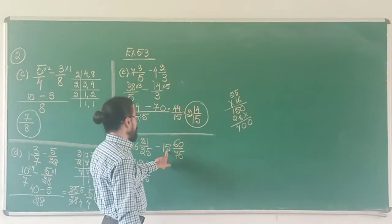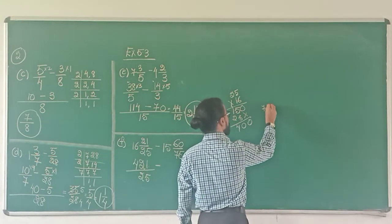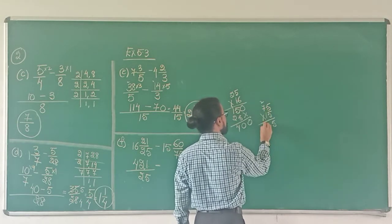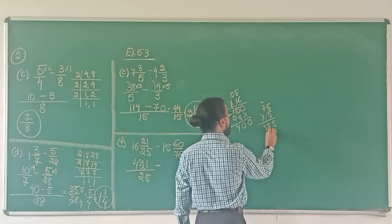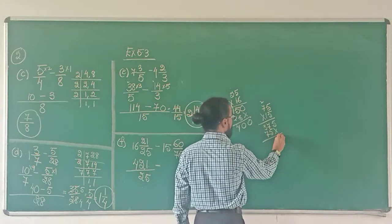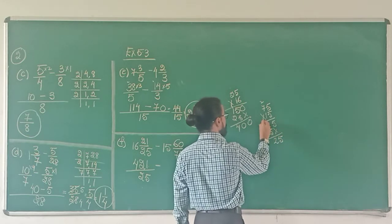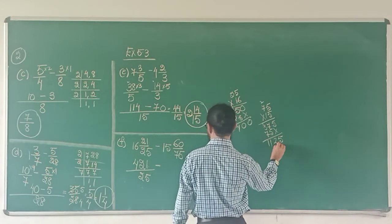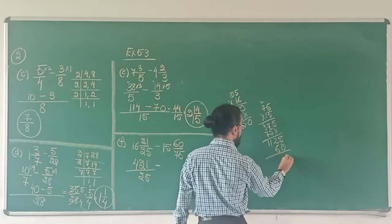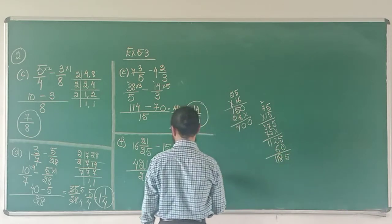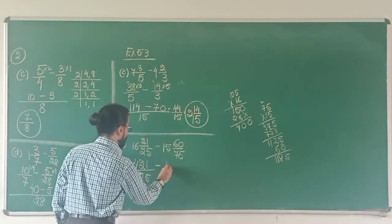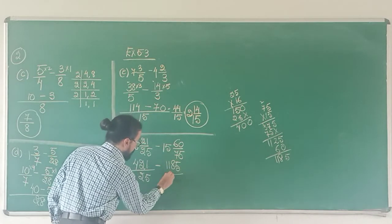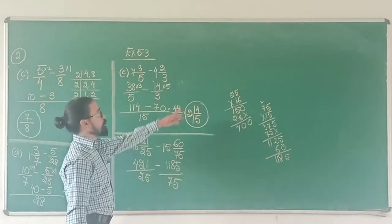Subtract 75 multiplied by 15. So 75 multiplied by 15. 5 5's are 25 carry 2, 5 7's are 35 and 2, 37. Cancel. 1 5's are 5, 1 7's are 7. 5, 7, 12. 7 and 1, 11. In this I have to add 16. So what do I do? 5 and 1, 6. So I get 1125 upon 75. I will run out of space so I erase the rough work.